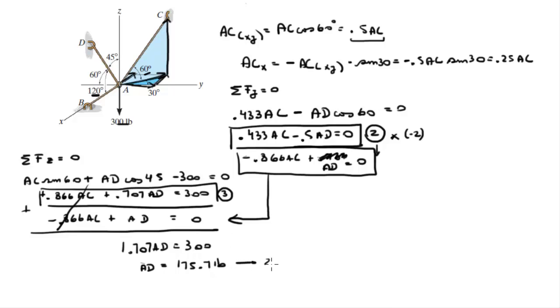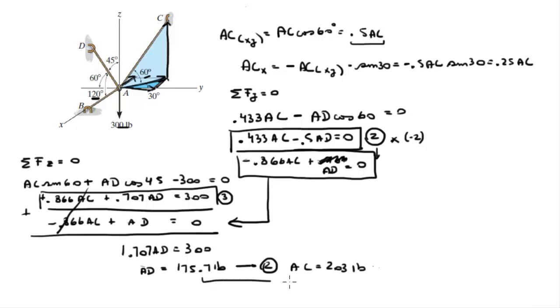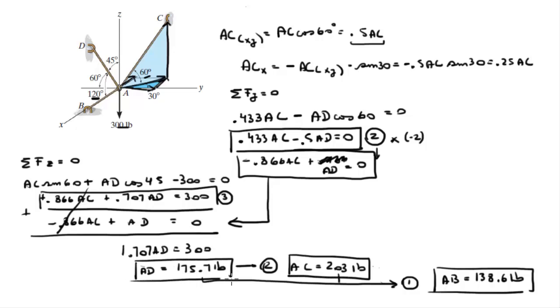You can then plug that into equation 2 and you get that AC is equal to 203 pounds. And then you plug these values into equation 1 up here that has all values. And when you plug these values into equation 1, you get the last one, which is AB, and it's equal to 138.6 pounds. Final answer for AB. Final answer for AC. And final answer for AD.